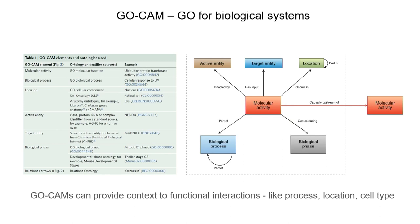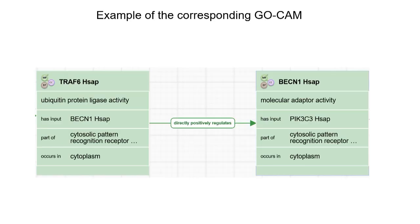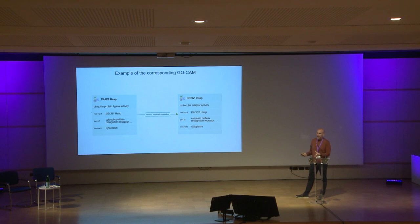A GoCam is a flow of these molecular activities linked together by specific relations from the GO relation ontology, such as positively regulated or negatively regulated. Here is the corresponding GoCam from my previous example. You have TRAF6 — HSAP means human — which has ubiquitin ligase activity acting on Beclin-1. It ubiquitinates Beclin-1 in the cytosolic pattern recognition receptor signaling pathway in the cytoplasm, and it directly regulates Beclin-1's molecular adaptor activity.